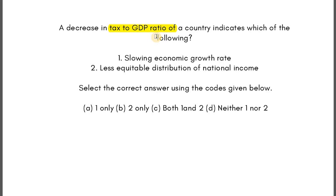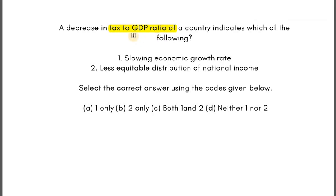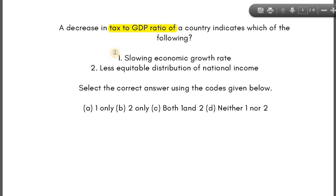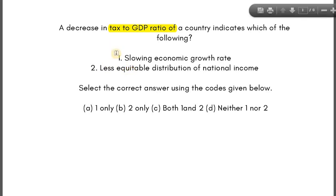Broadly speaking, either the government decreases the tax rate — so for the given GDP, if the tax rate goes down, the government collects lesser revenue — or there is a fall in GDP, which implies a slowing down of economic growth. Because there is no option stating a reduction in tax rate, we cannot assume it on our own, so we go with the only remaining option: slowing down of economic growth.